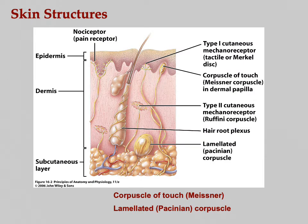The Meissner corpuscle — the corpuscle of touch — is found in the dermis, right at the boundary between the epidermis and dermis. Those are mostly for light touch. The Pacinian corpuscle is deeper down and is for heavier pressure.